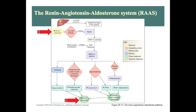Now that we have angiotensin-1, we need to convert it into the main player, which is angiotensin-2. In order to convert angiotensin-1 to angiotensin-2, we need an enzyme called ACE. That ACE enzyme is released by the blood vessel endothelium — the inner lining of the blood vessel. Once ACE is released, it converts angiotensin-1 into angiotensin-2, and now we will see the changes that increase blood pressure.